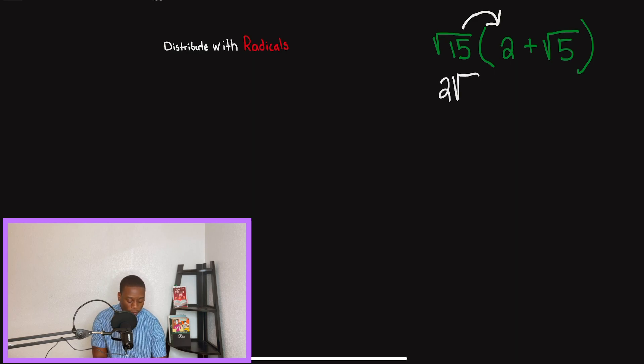So radical 15 times 2 is going to give me 2 radical 15. That's how we multiply those two together. Now, once we go back and we do repeat this step, but now we distribute radical 15 to radical 5, now we just multiply those two numbers and keep it under the same radical. So we'll have radical 75. So now we've multiplied. That was the first step.